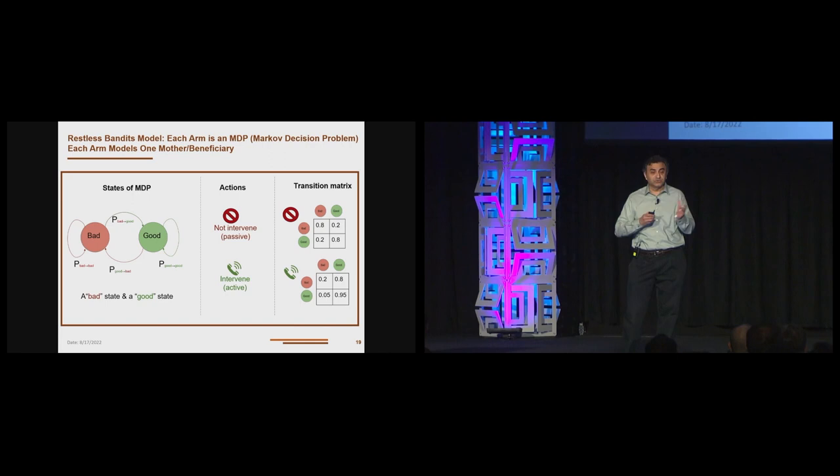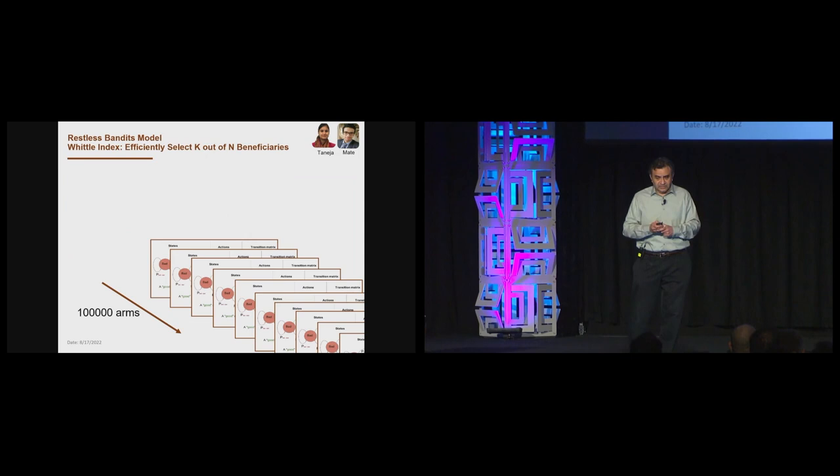So the challenge here is that a service call may not change a beneficiary state. A beneficiary may change state on their own, and yet we have to prioritize 1,000 beneficiaries per week. So how do we solve this problem? We appeal to restless bandits where we try to pull K out of N arms per week. For those who may not be familiar, in a restless bandit, each arm is an MDP, a Markov decision problem. In this case, the states of the MDP are a bad state - a mother might be in a bad state, she has not listened to a voice message, or a good state, she has listened to a message.